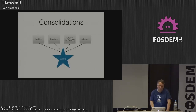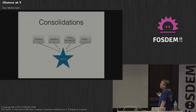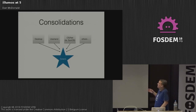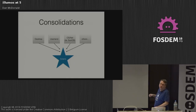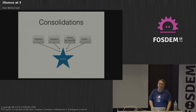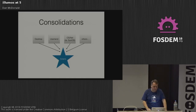To build Solaris 2, you had consolidations: desktop software, user land, and the OS/Net consolidation, which formed the core of SunOS. There are other consolidations as well, and you put them all together to form Solaris.